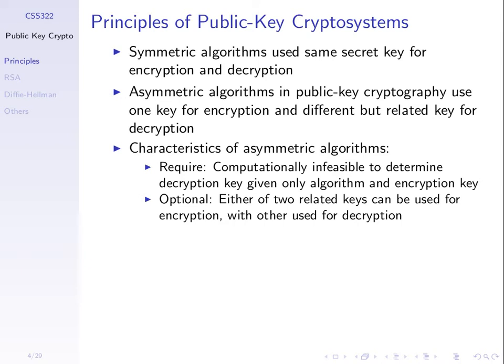For security, it must be practically impossible for an attacker, given the public key, to find the private key. Because if they can find the private key, our security is defeated. Even though the attacker knows the mathematical relationship between the keys, given one key it should be computationally hard to find the other. That's where our number theory comes in.